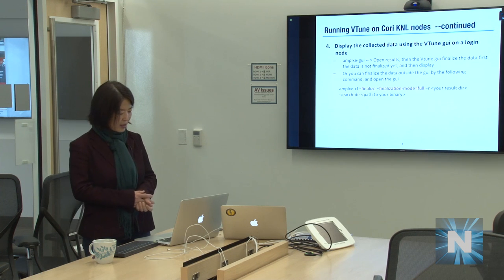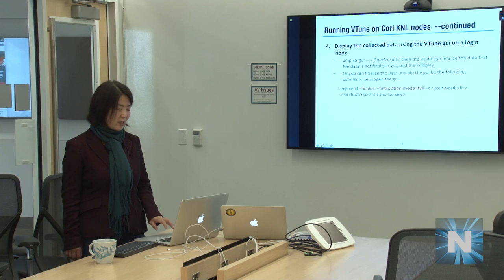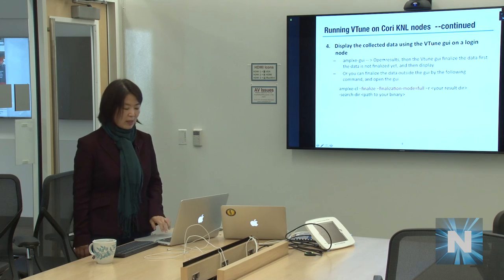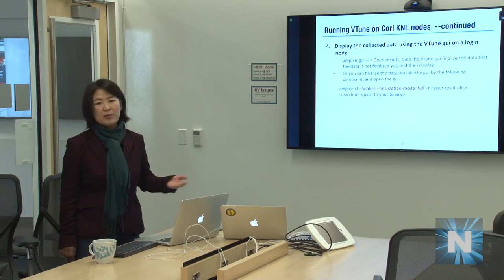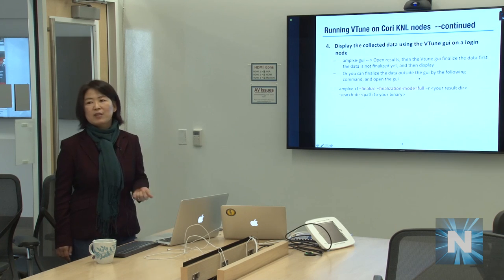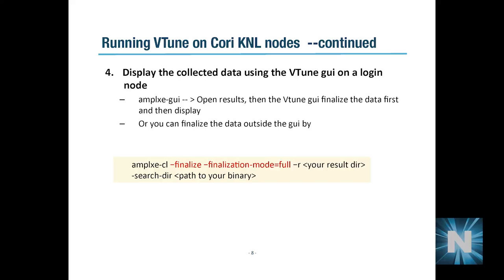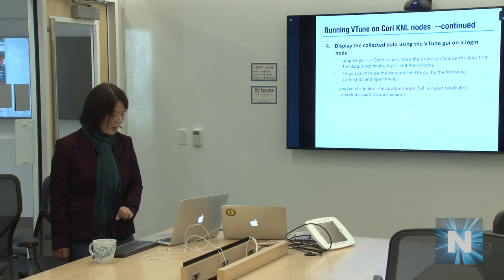Once the data is collected, you can use the VTune GUI on the login node to display results. Run the amplxe-gui command after loading the VTune module, then click 'Open Results' to navigate to your result file. If the data has not yet been finalized, the GUI will finalize it upon opening, or you can finalize manually by running the finalize command with --finalization-mode=full.